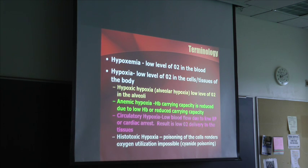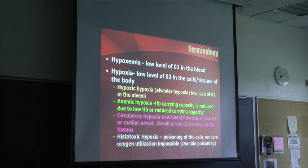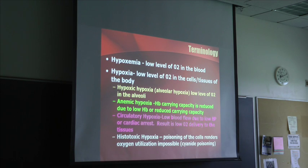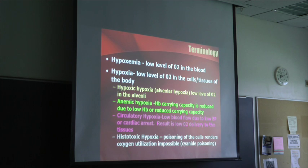Hypoxia we can assume, but we can't measure it. That's a low level of oxygen in the cells or tissues of the body. It just follows that if you don't have enough oxygen in the blood, then your tissues are going to become hypoxic because not enough oxygen is delivered to the tissues.